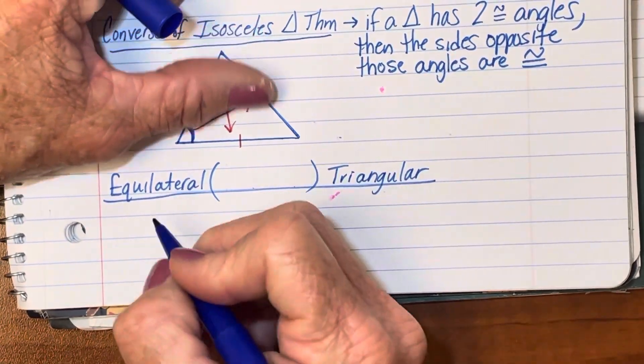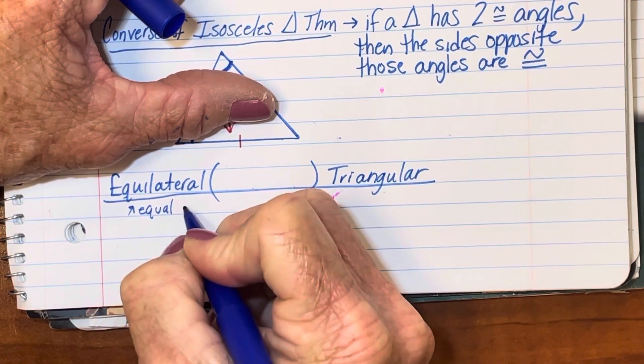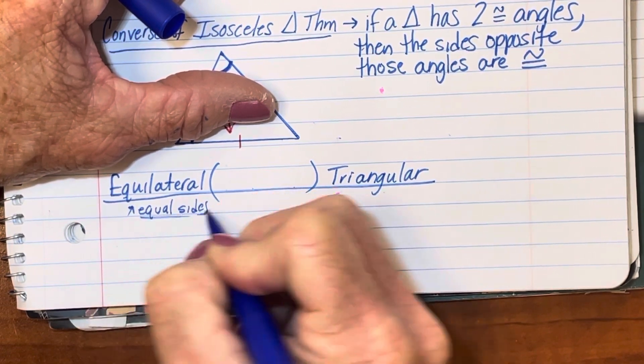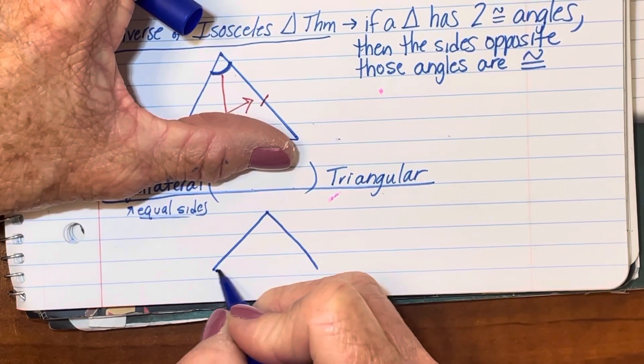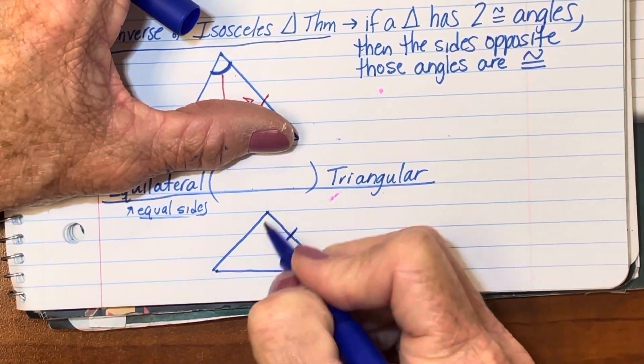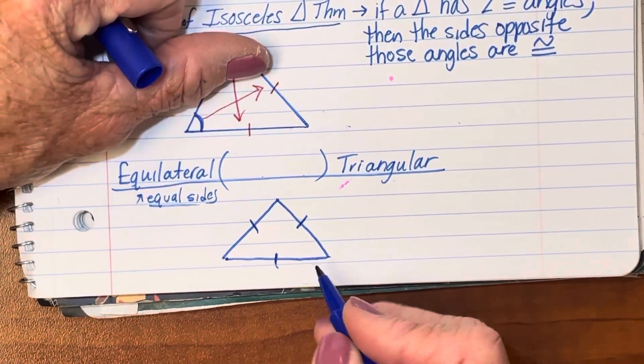So equilateral means equal sides. So if we draw a triangle, quite frankly, it'll look like a lot of the other ones I drew up there, just sketching it, but now it has all three sides congruent to each other.